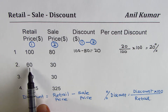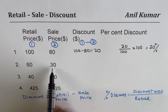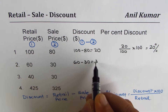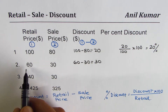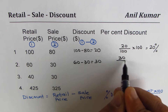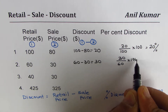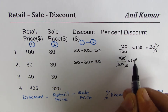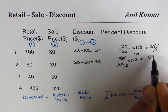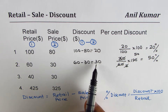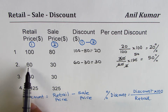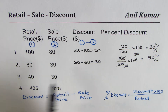In the next example, the retail price is $60 and the sale price is $30, so the discount is 60 minus 30, which is $30. The percent discount is 30 over 60, times 100. Simplifying, 30 over 60 is one half, so we get 50 percent. You can see that $30 is 50 percent — or half — of $60. The discount is always based on the retail price.